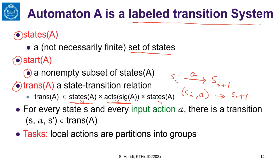Since input actions are always enabled, this imposes a condition on the set of transitions: for every state S and every input action A, there must always exist a transition triple that is an element of the set of all transitions. This tells us that whenever an automaton is in any state, it can perform an input action.